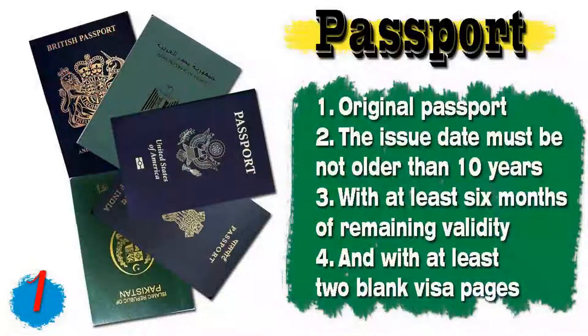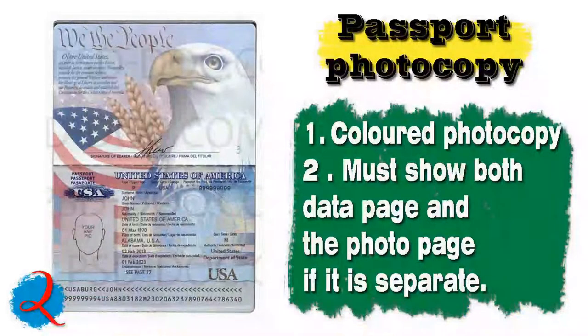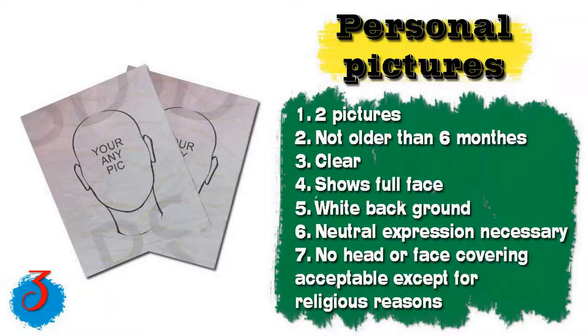Speaking about the documents needed to apply for the visa: the first document is your passport. The passport must be original, the issue date must not be older than 10 years, with at least six months of remaining validity, and at least two blank visa pages for stamps. Number two, you will need a photocopy of your passport — recommended to be colored, showing both the data page and photo page if they are separate.